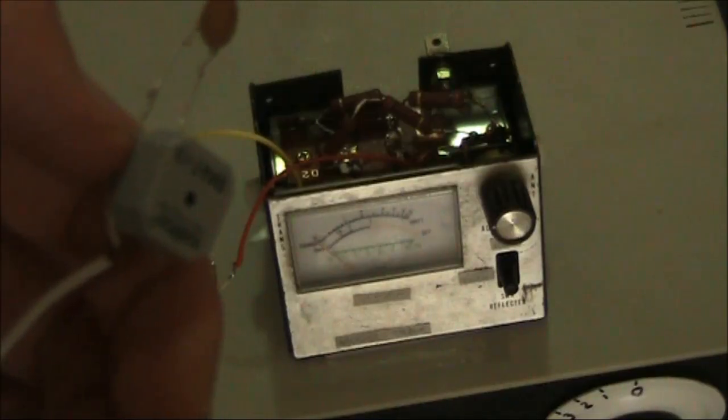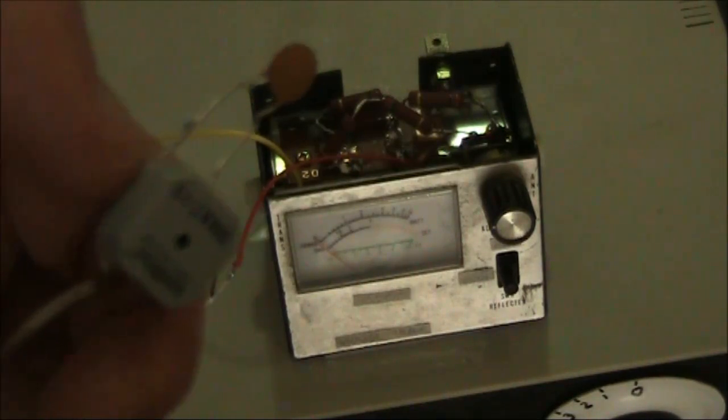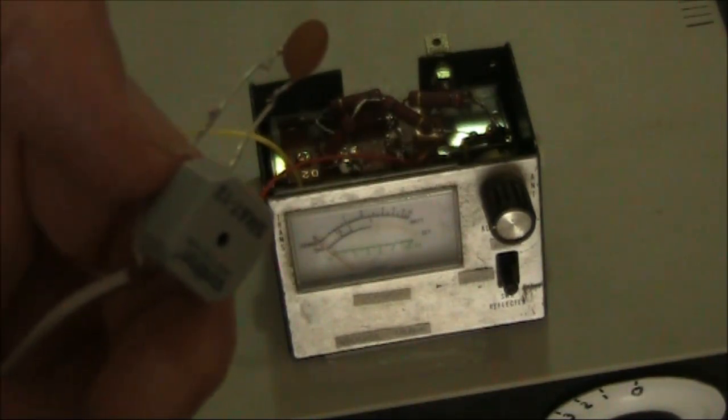Instead of adjusting the antenna coupler until you see zero on the meter, in this case, what you do is you go to SSB, talk into the microphone, and adjust the antenna coupler until you're hearing nothing from the transducer. If you're hearing quite a lot, then your antenna coupler is probably out of tune.